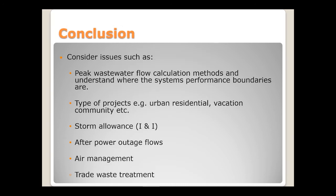In summary: look at wastewater flows and the type of project — urban residential or vacation community — as flow parameters differ. Consider storm allowance and what design and management practices will eliminate it. Ensure downstream infrastructure has capacity for power outage flows and volumes. Manage air in the system and address trade waste pre-treatment from each individual lot. Pressure sewerage design isn't hard, it's just a little different.